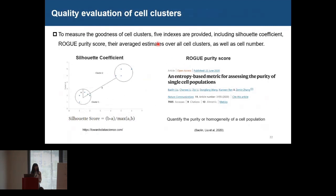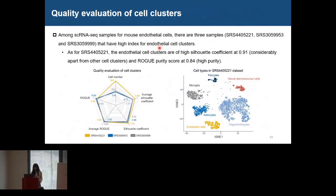We provide five indexes, including the silhouette coefficient, the Jaccard purity score, their average estimates over all clusters, as well as the cell number. For example, for mouse endothelial cells, there are three single-cell RNA-seq samples that have high index for the endothelial cell clusters. For the sample colored in yellow, the endothelial cell clusters have a high silhouette coefficient and Jaccard purity score, meaning the cluster is considerably apart from other cell clusters, compact, and of high purity. In the t-SNE map, we can see that the endothelial cell cluster is truly apart from other clusters and compact.